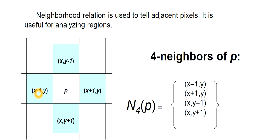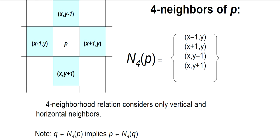The four neighbors of P at x, y are: x minus 1, y and x plus 1, y (with y fixed for horizontal neighbors), and x, y minus 1 and x, y plus 1 (with x fixed for vertical neighbors). So N4(P), the four neighbors of P, is the set: {x-1, y; x+1, y; x, y-1; x, y+1}. Four neighborhood relation considers only vertical and horizontal neighbors.